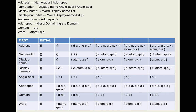Checking the second condition: only display-name-list has epsilon in its first set. So we check: first(display-name-list) intersected with follow(display-name-list). First set is {epsilon, atom, quoted-string}; follow set is {<}. No intersection — we pass. So we can write a predictive parser for this grammar.